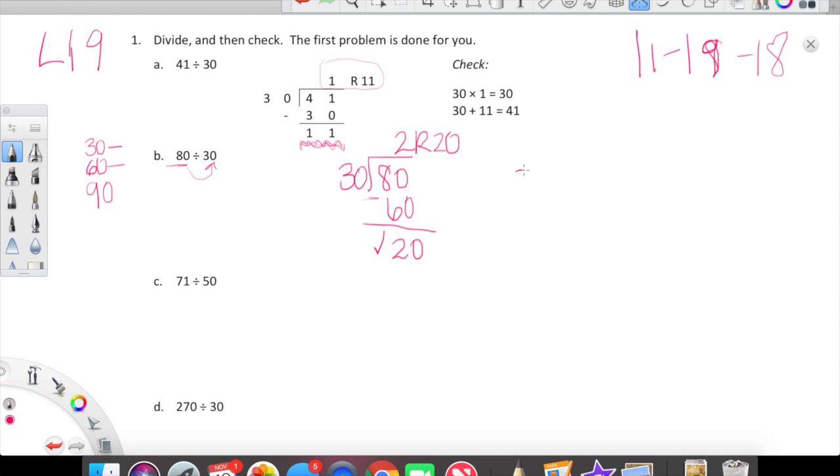What we need to do before we move on is check ourselves. Here's how we're going to check ourselves: we're going to multiply 30 by 2. 30 times 2, as you guys know, is 60. Now we're going to take 60 and we're going to add our remainder, which is 20. We had 20 leftover, so we're going to add 20. Think about 60 plus 20 - that is 80. And we're hoping to end up with the same number as we were dividing from, so we are all good to go. That's a perfect check.